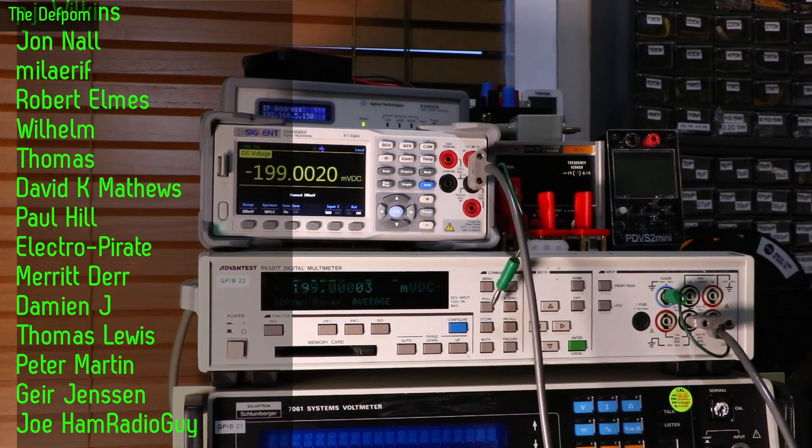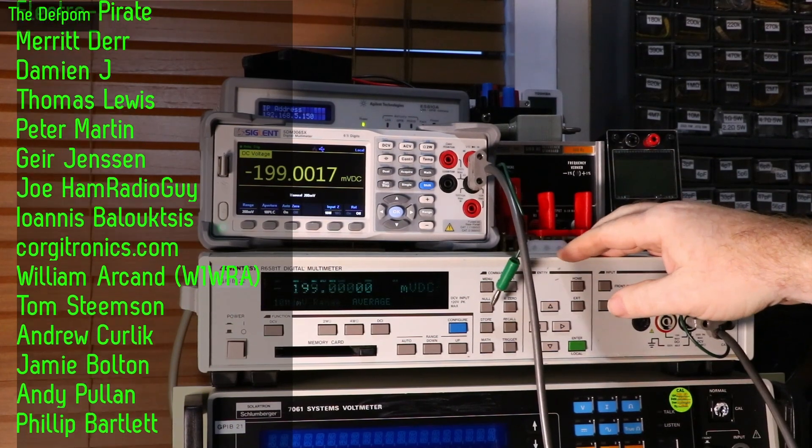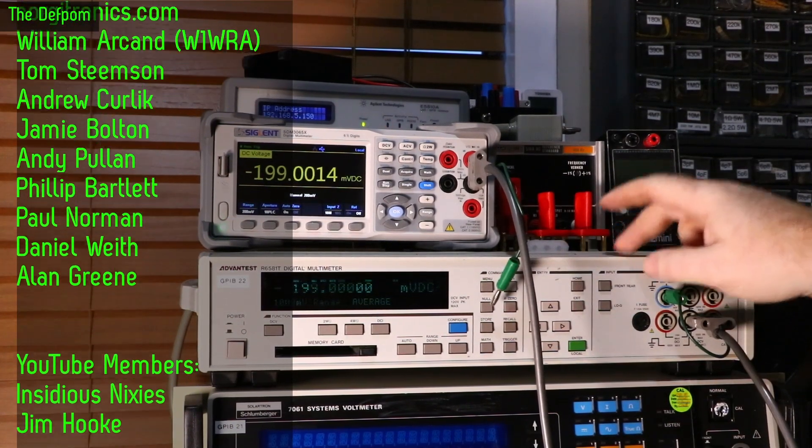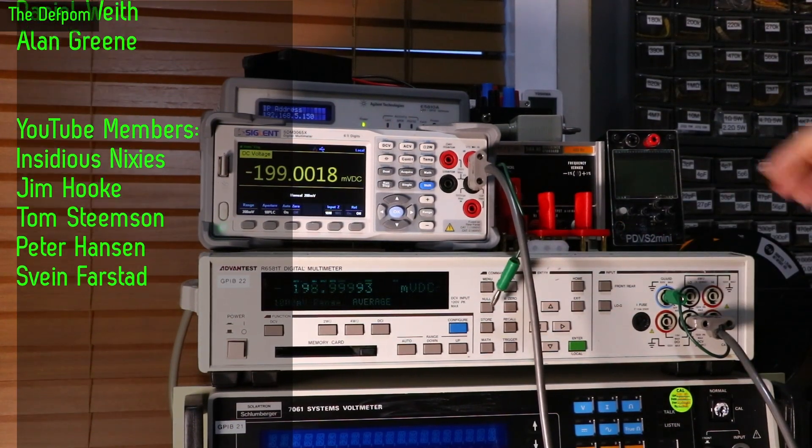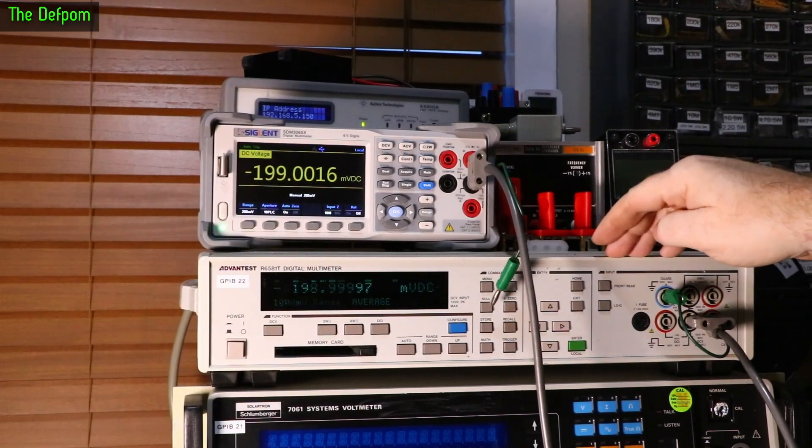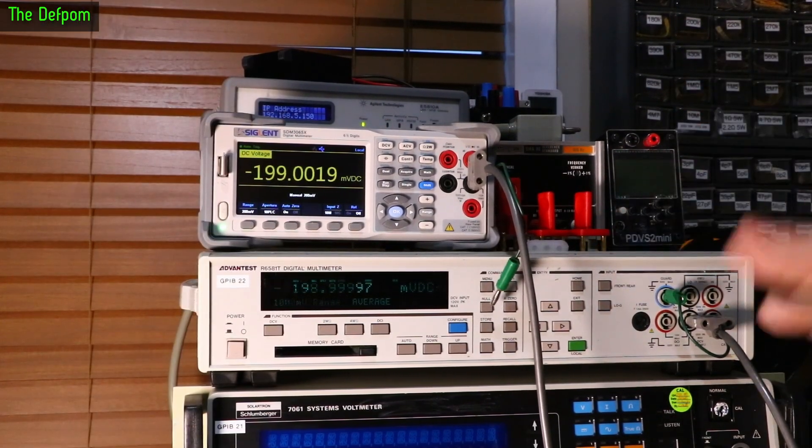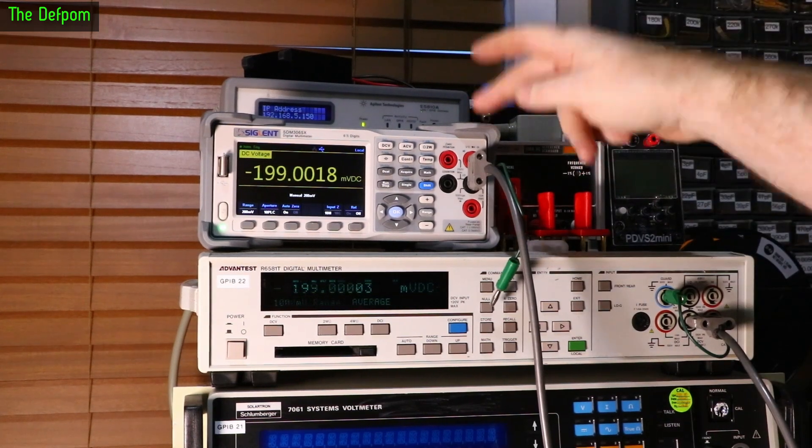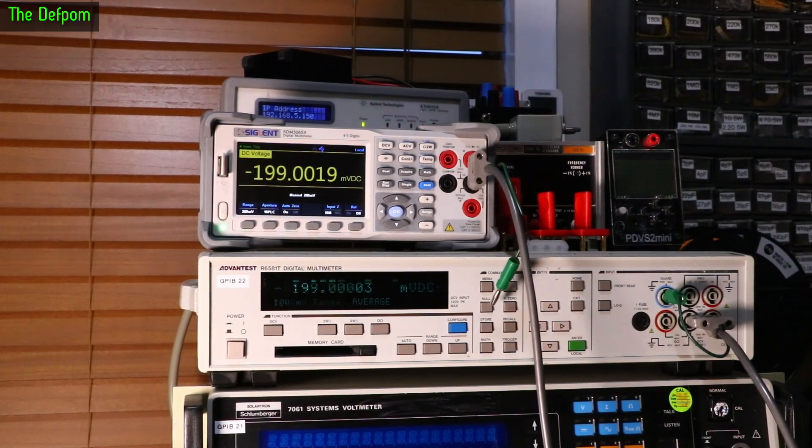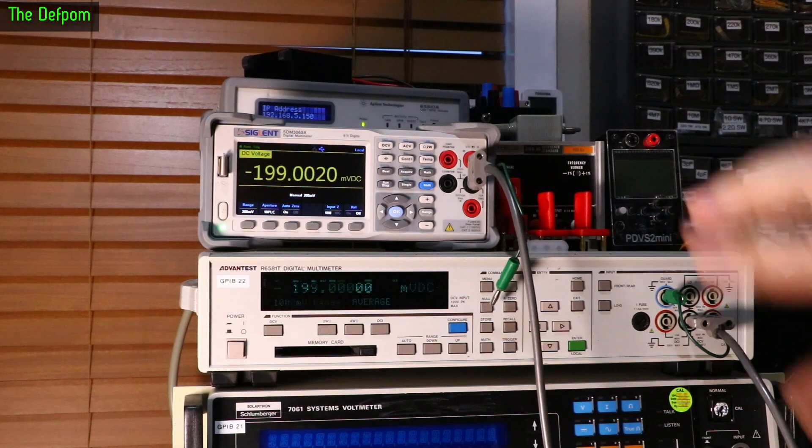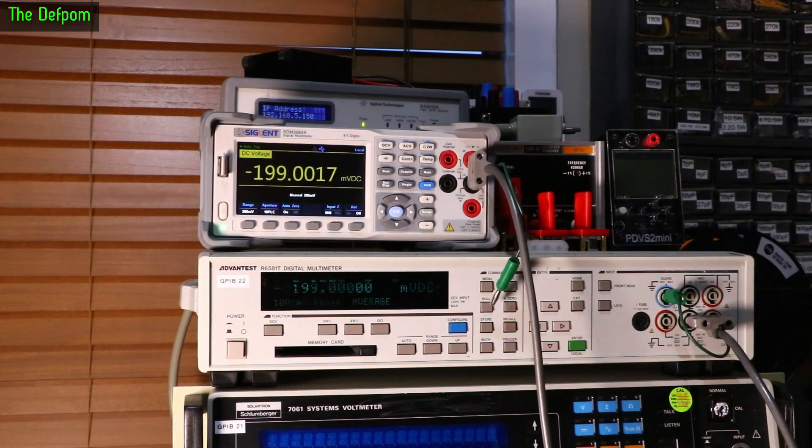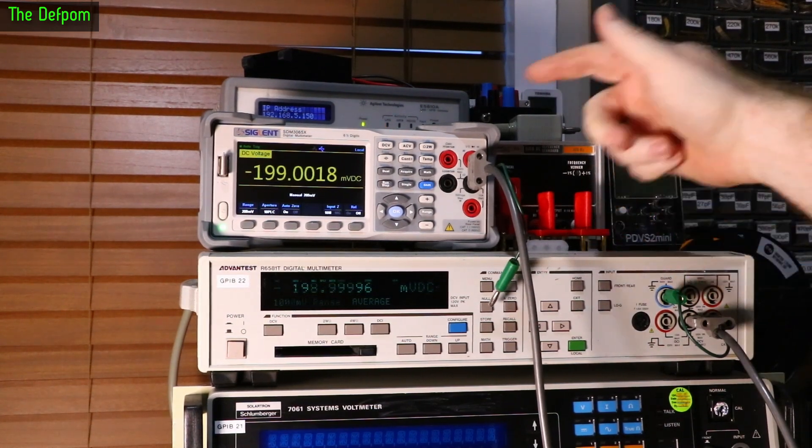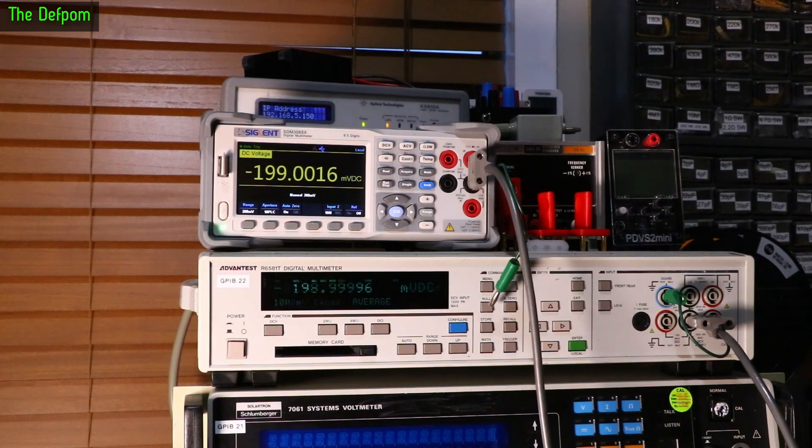I've got my Advantest R6581T 8.5-digit multimeter here. These aren't perfect multimeters - they do have linearity issues, but for calibrating a 6.5-digit should be no problem. It's still two orders of magnitude more than this meter. As long as you've got one more digit, it's fine.